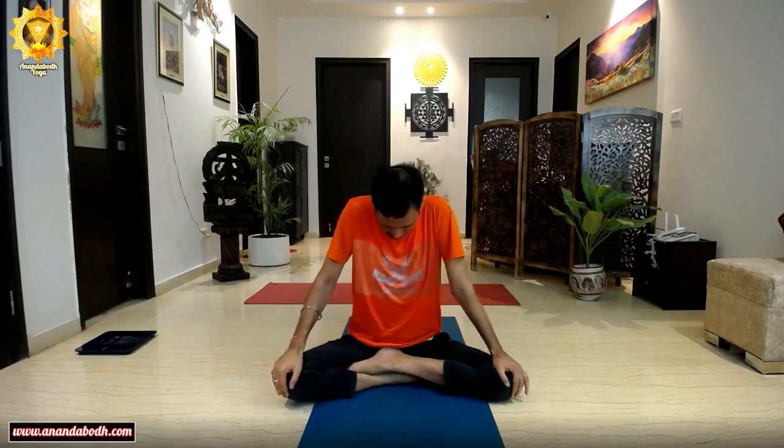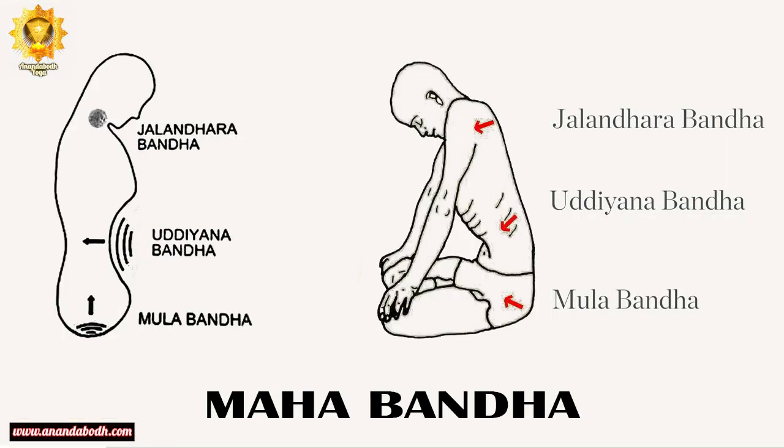The Mula bandha you have been doing, the Jalandhara bandha you have been doing. The third bandha is the abdominal lock called Udyana bandha. And when you practice all three bandhas in one practice, it is called Maha bandha. So three basic bandhas, and if you include the fourth one, that is Maha bandha.